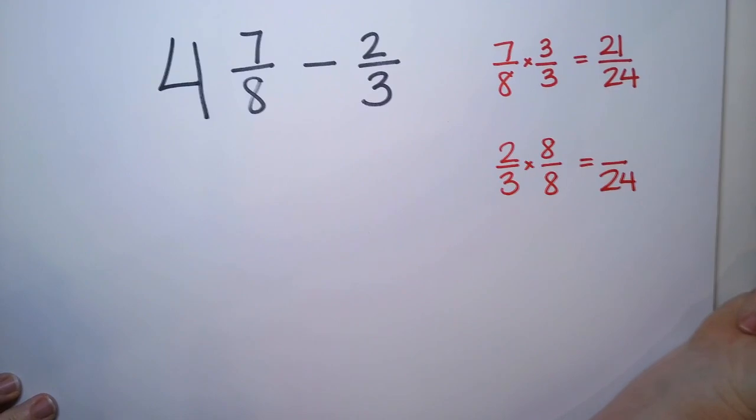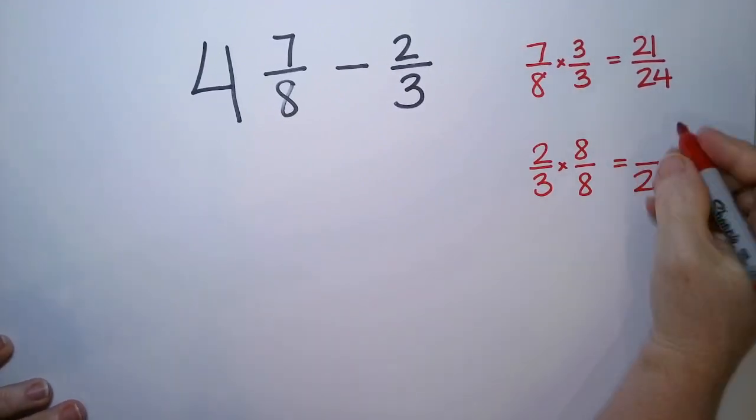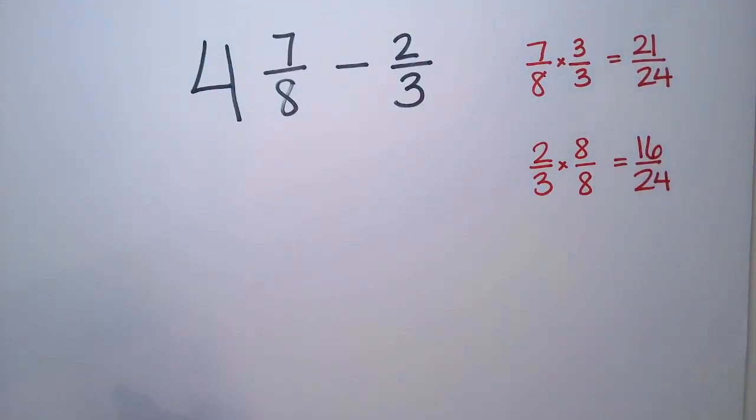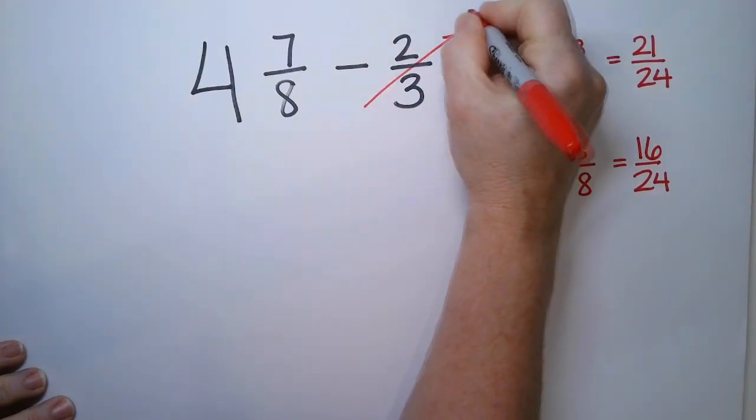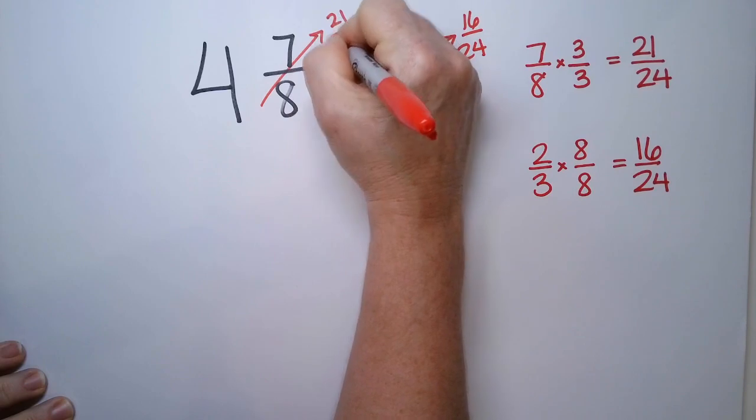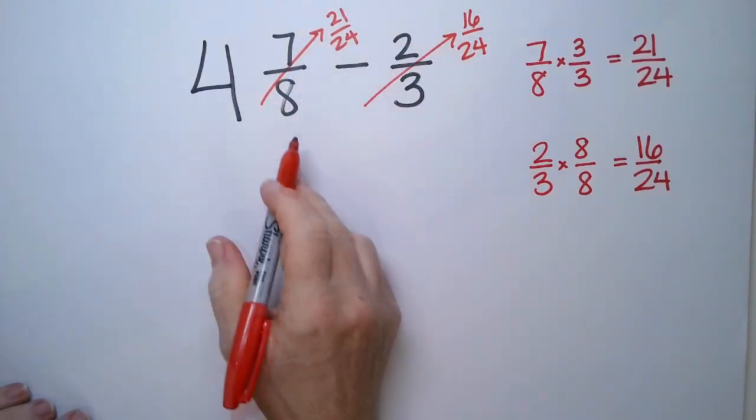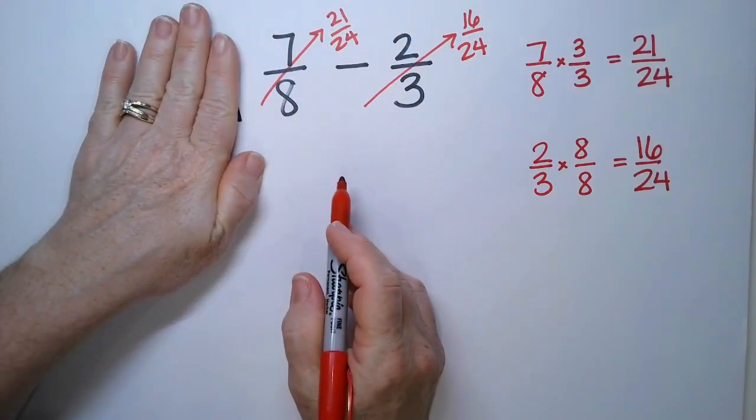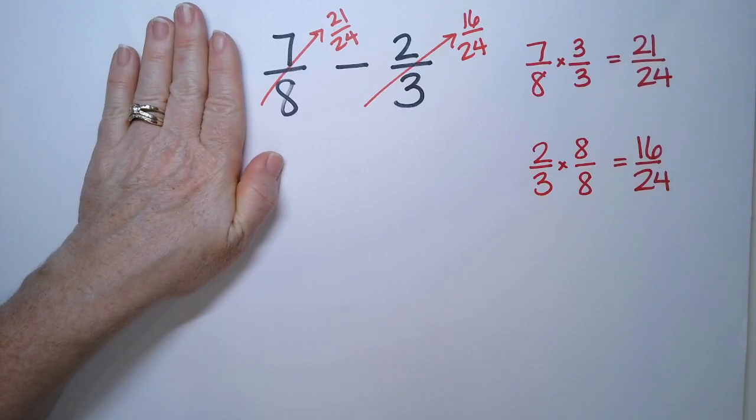Three times eight is 24. Oh good, the denominators are the same. And then two times eight is 16. So let's rewrite this problem. This one is 16 over 24. This one is 21 over 24. I'm not borrowing. All I'm doing is scaling this up. You could do the same problem without the whole number, and it'd be the same procedure.